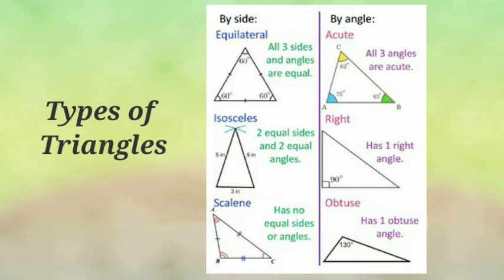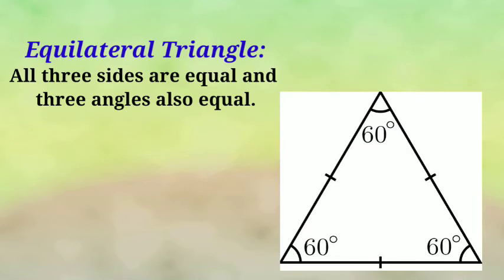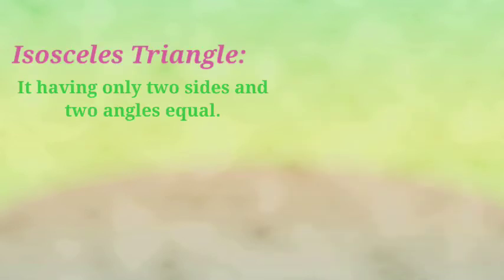First triangle is equilateral triangle. In equilateral triangle all 3 sides are equal and 3 angles also equal to each other.